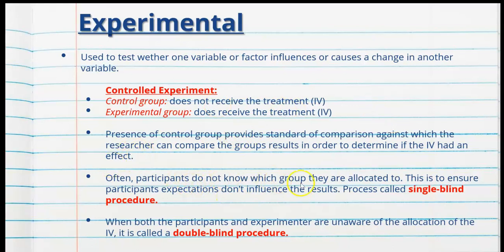Often participants don't know which group they're allocated to, to ensure that participant expectations don't influence the results — these are called demand characteristics. This is called a single-blind procedure, where the participant is blind to what group they're part of. The experimenter knows what group each participant is allocated to, but the participant does not. When both participants and the experimenter are unaware of the allocation of the independent variable, this is called a double-blind procedure, used to eliminate as many extraneous variables as possible.